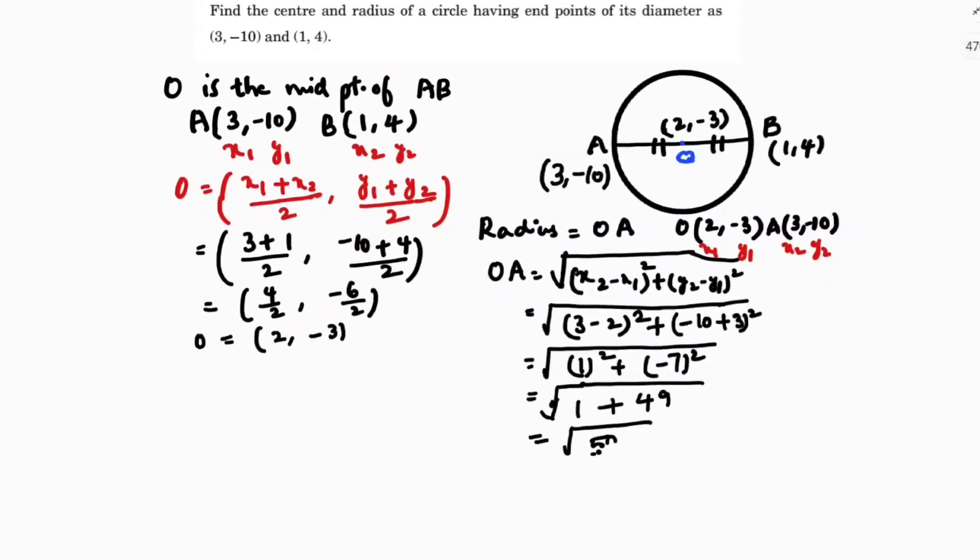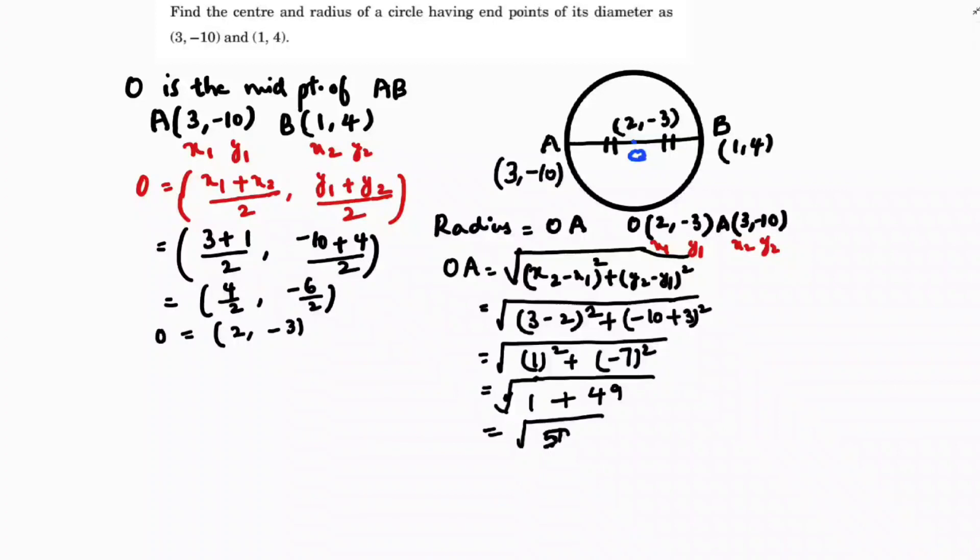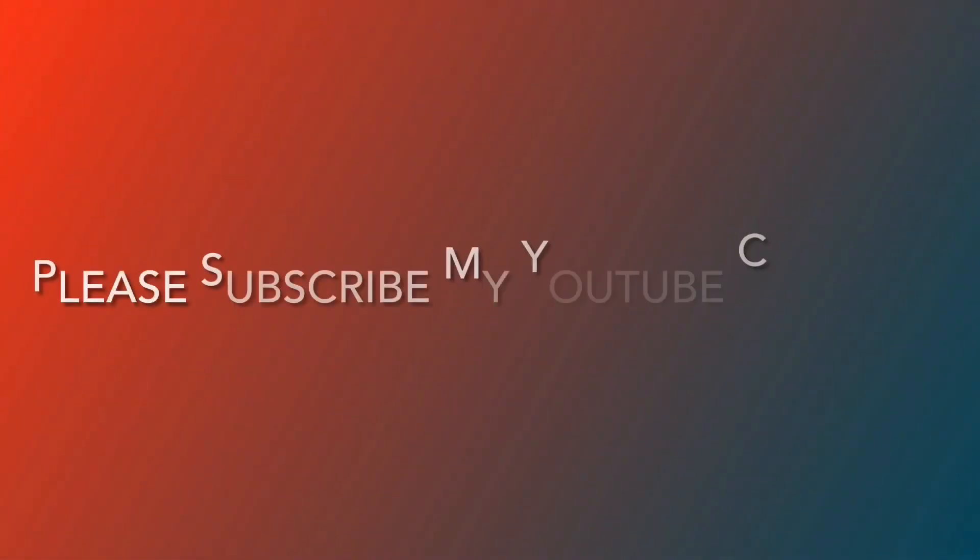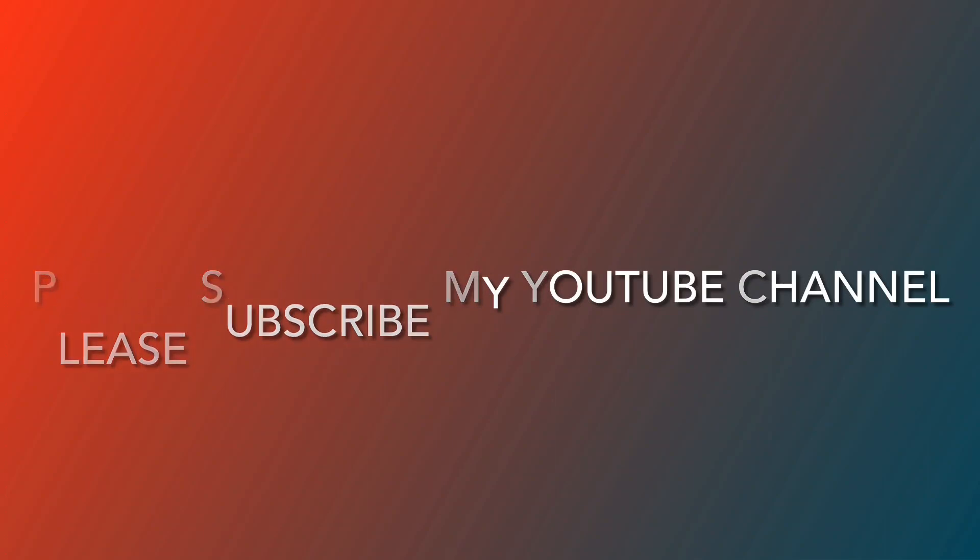√50 is nothing but here, √50 you can write as 2 × 5 × 5. So 5√2 units. So the radius is 5√2 units.